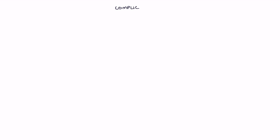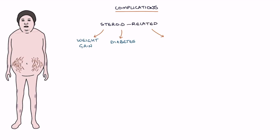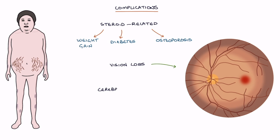Finally, let's go through the complications. The complications of giant cell arteritis include steroid-related complications like weight gain, diabetes, and osteoporosis, vision loss, and cerebrovascular accident or stroke.